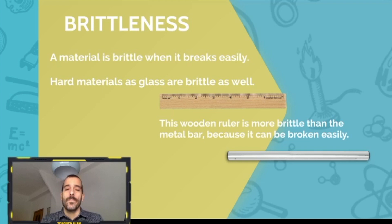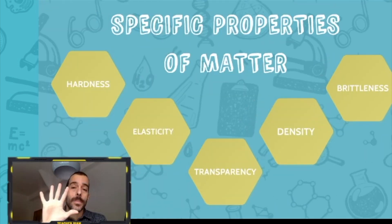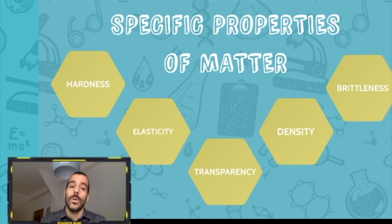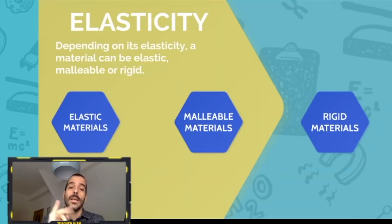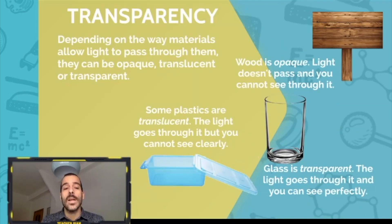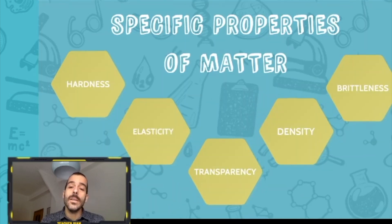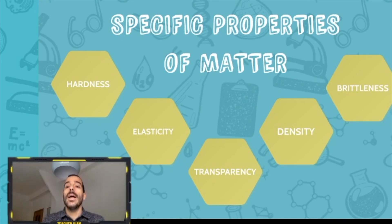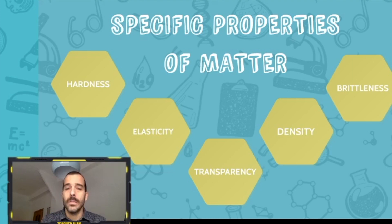So these were the five specific properties of matter: hardness — materials can be soft or hard; elasticity — materials can be elastic, malleable, or rigid; transparency — materials can be opaque, translucent, or transparent; density — low density or high density; and brittleness — more brittle if they break easily, or less brittle if they are very hard to break.